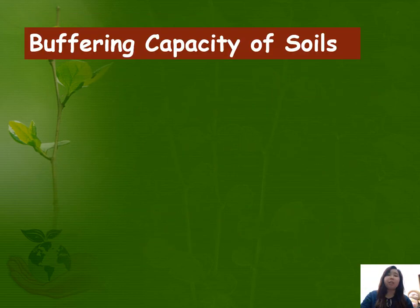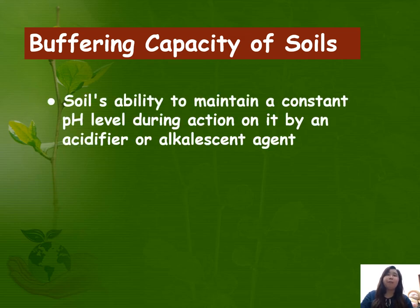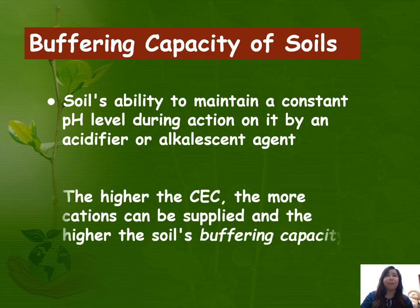In relation to base saturation, let's look at the buffering capacity of soils. Buffering capacity is the soil's ability to maintain a constant pH level during action on it by an acidifier or an alkalizing agent. The higher the cation exchange capacity, the more cations can be supplied, and the higher the soil's buffering capacity.